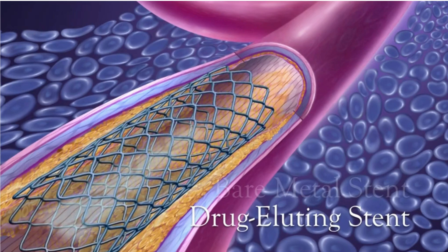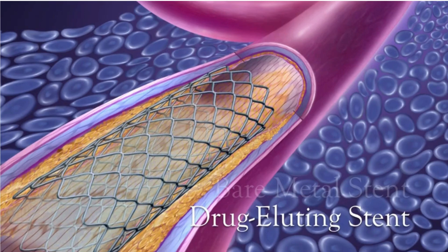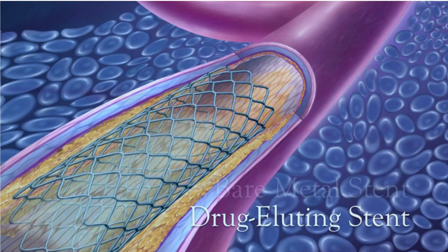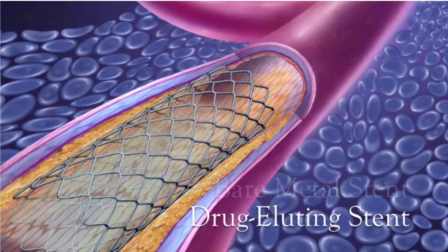Next, drug-eluting stents. These stents are coated with medications that help prevent the recurrence of blockages. They are known for reducing the risk of restenosis compared to bare metal stents.